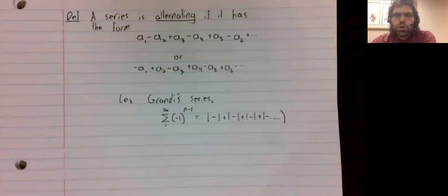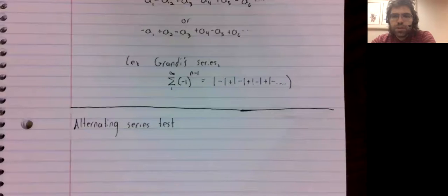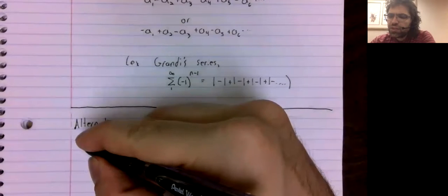We could attempt the root test or the ratio test, but frequently there's a very quick and easy way of saying that an alternating series converges. That is the appropriately named alternating series test.